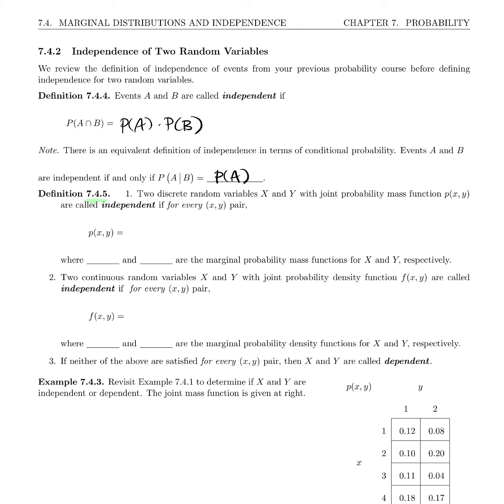Definition 7.4.5. Two discrete random variables X and Y with joint probability mass function p(x,y) are called independent if for every (x,y) pair, p(x,y) equals p_X(x) times p_Y(y), where p_X(x) and p_Y(y) are the marginals, the marginal probability mass functions for X and Y respectively.